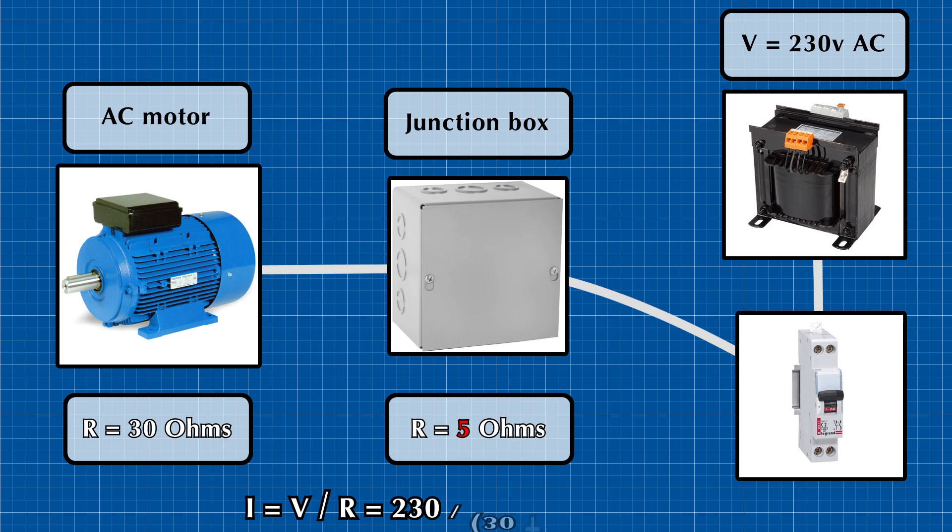So 230 volts supply with 30 ohms of the load and 5 ohms from the loose connection in series, this will make current equal to around 6.57 amps instead of the 7.6 amps we had before loose connection.